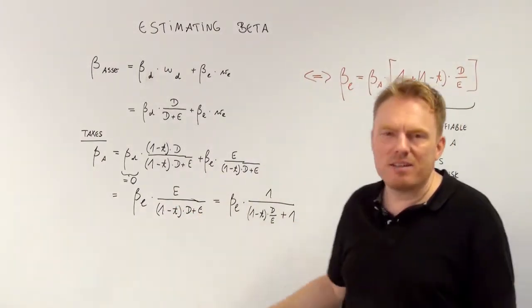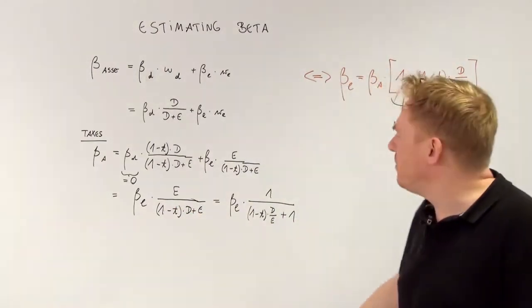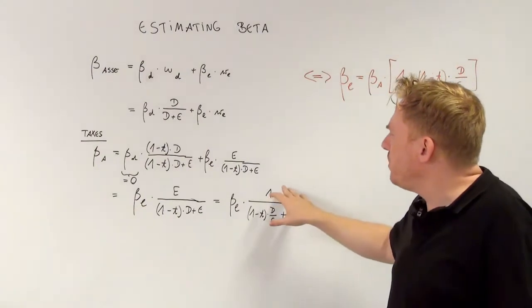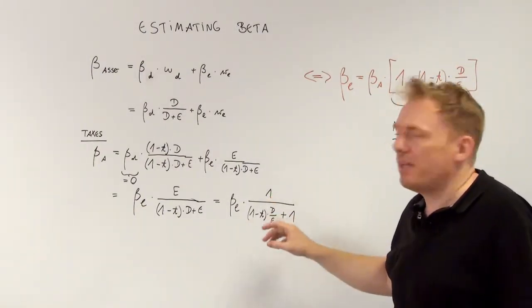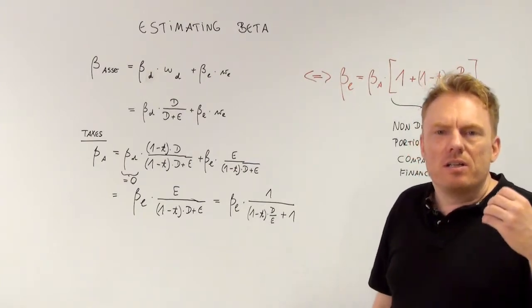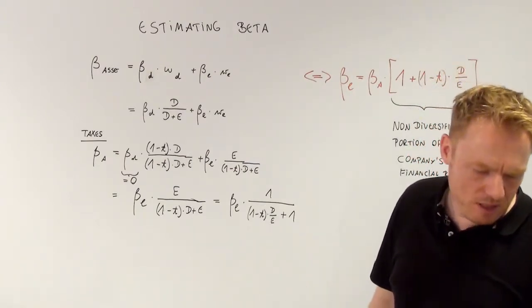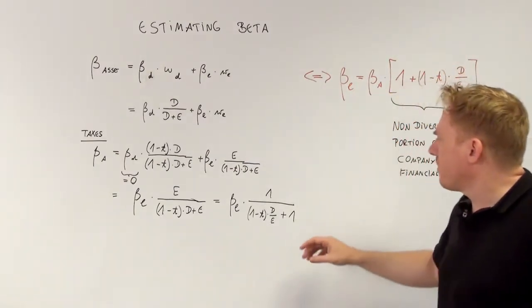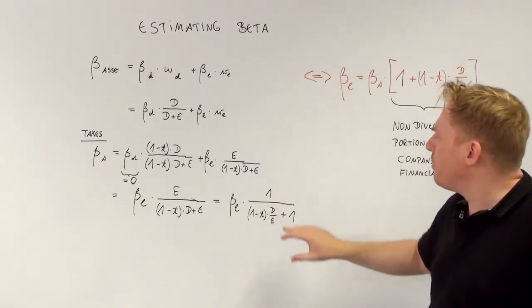If we look at this portion and cancel equity, if we divide numerator and denominator, we get this formula.